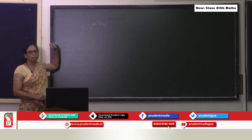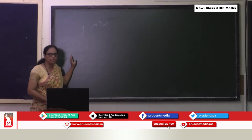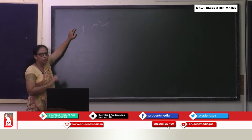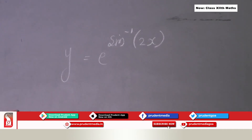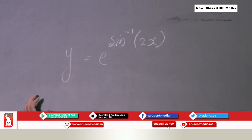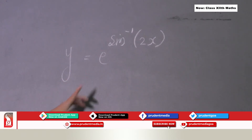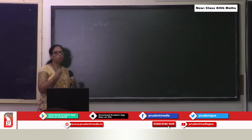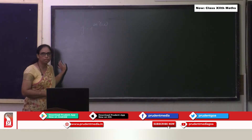Here is another important case defined using inverse trigonometric function. The form is y equal to e raised to sine inverse of 2x. This is again a composite function — formed by combining exponential, inverse trigonometric, and polynomial forms.